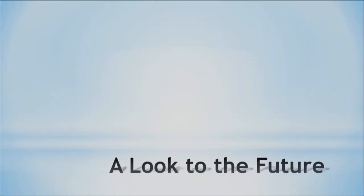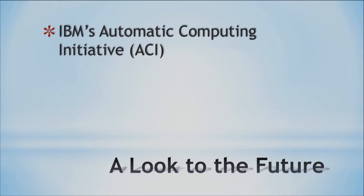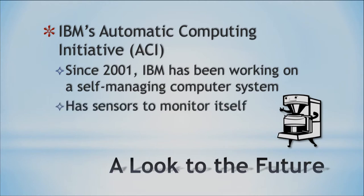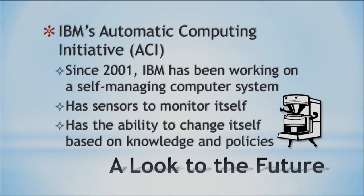Let's look into the future. IBM and other companies are creating Automatic Computing Initiatives — ACI. Since 2001, they've been trying to create a computer system that's self-managing. It has sensors that monitor itself, and if things get out of whack, it updates itself. If certain security things are happening, it can alert itself and compensate for that. Based on certain knowledge and policies, it can change itself.